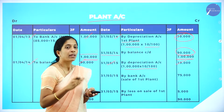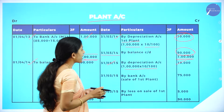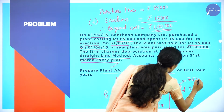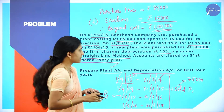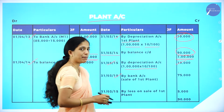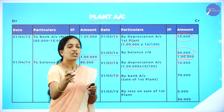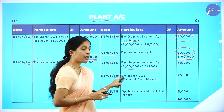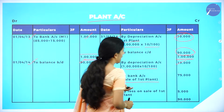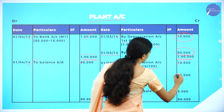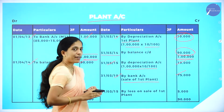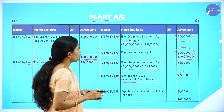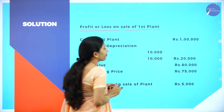At the end of the second year, Plant 1 was sold for rupees 75,000. We record: 31-3-2015, by bank account — sale of first plant — rupees 75,000. Now we need to check whether the plant was sold at a profit or a loss.